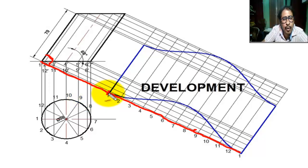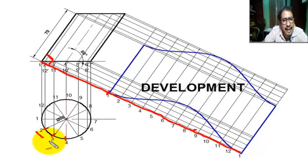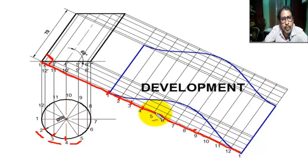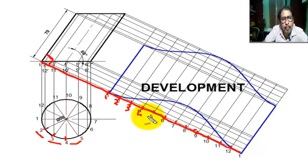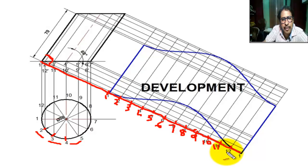From a suitable point, with the arc measurement — this dimension, this dimension, this dimension are equal — we take 12 measurements of equal arc length and mark the points: one, two, three, four, five, six, seven, eight, nine, ten, eleven, twelve, and again one.